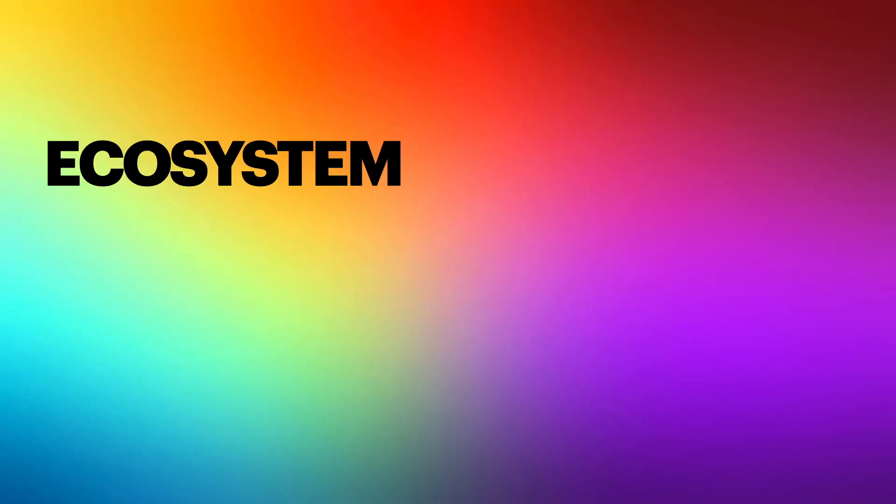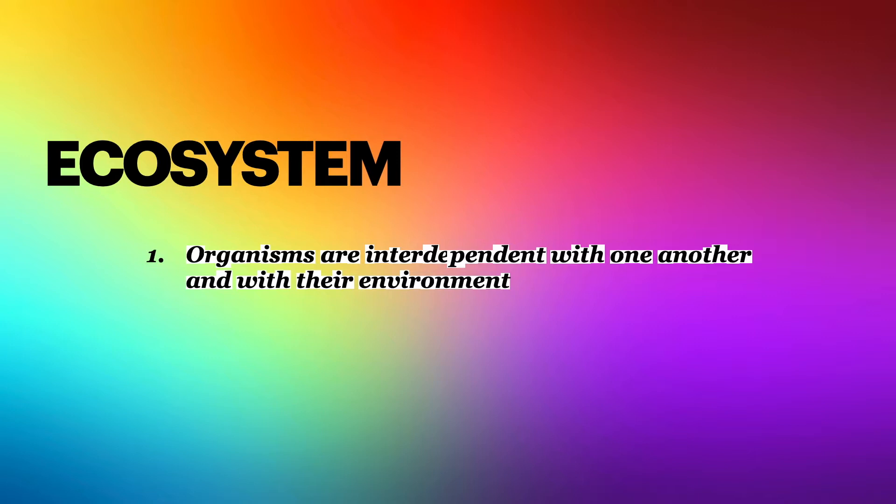When we look at ecosystems, we're looking at two big ideas. First, organisms are interdependent with one another and with their environment — think food webs. And two, matter and energy flow through an ecosystem.